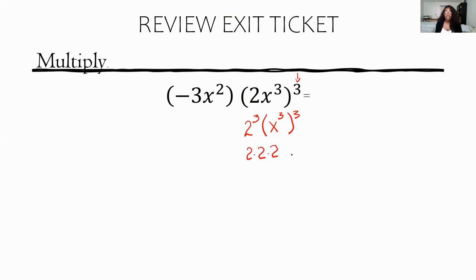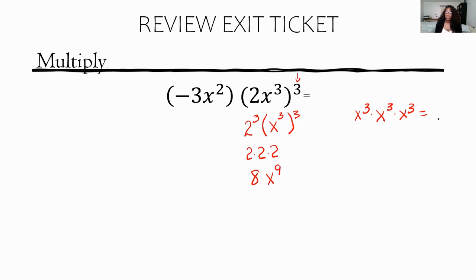2 cubed, or 2 to the third power, is 2 times 2 times 2: that gives me 8. Now for x cubed raised to the third power, that means x to the 9th power, because x to the third is multiplied by itself three times. Adding the exponents: 3 plus 3 gives me 6, and 6 plus 3 gives me 9 — that's where x to the 9th comes from.